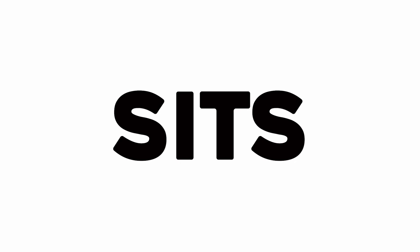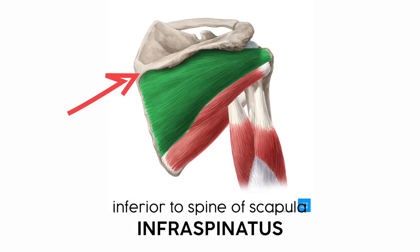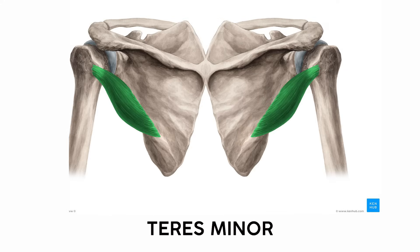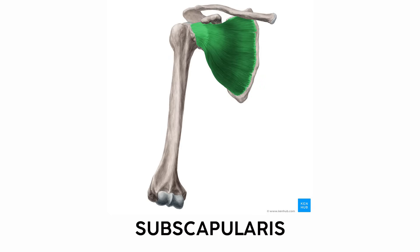The first three of the SITS can be easily found on the posterior side of the scapula using the big bony landmarks to find their names. The supraspinatus is superior to the spine of the scapula while the infraspinatus is inferior to the spine of the scapula. Meanwhile, the teres minor makes an angle with each humerus that looks kind of like an M for teres minor. Finally, the subscapularis — the S in the SITS group — literally means under the scapula.